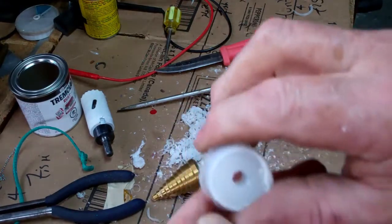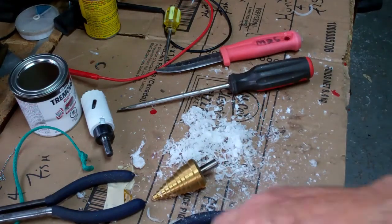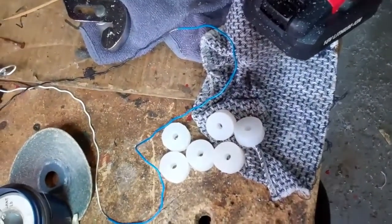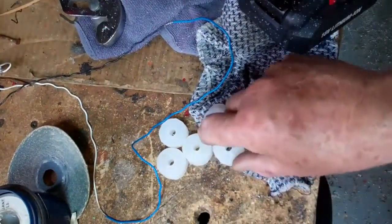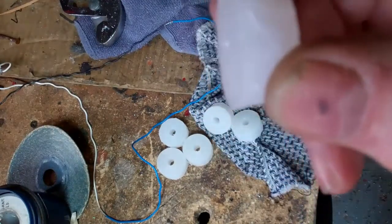So get all that cleaned up. Six little Teflon pulleys made. Now I've got to put a groove in the sides of them.